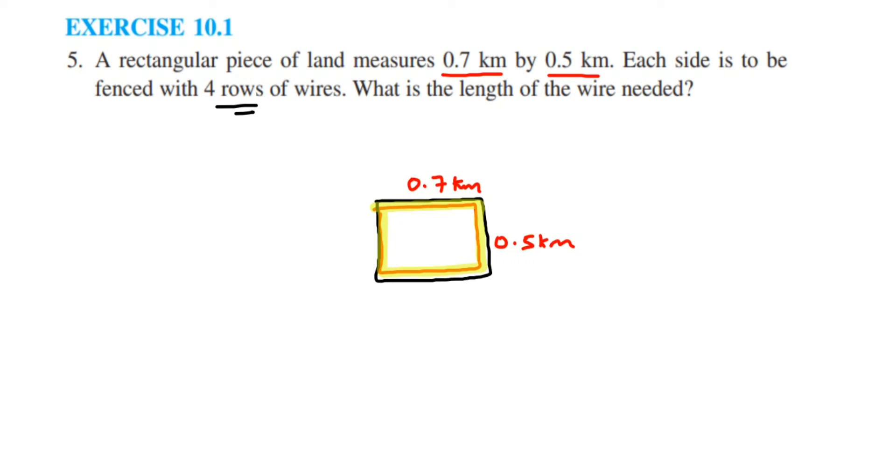First, we are going to find out the perimeter, and that much wire we required for 1 round. Once we got it, we are going to multiply with 4 because we want 4 rows of wire. 4 times we want to fence it. I hope this is clear.